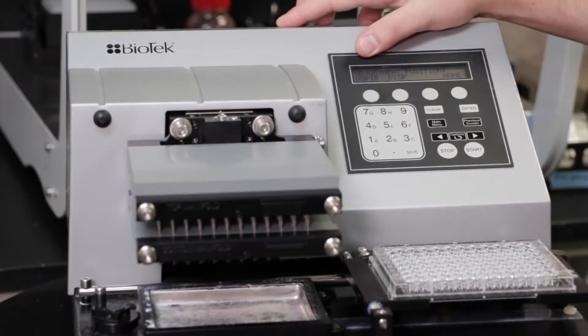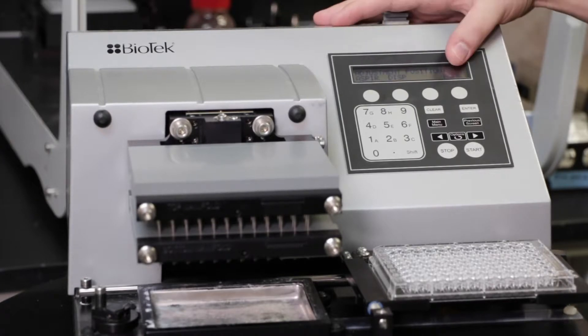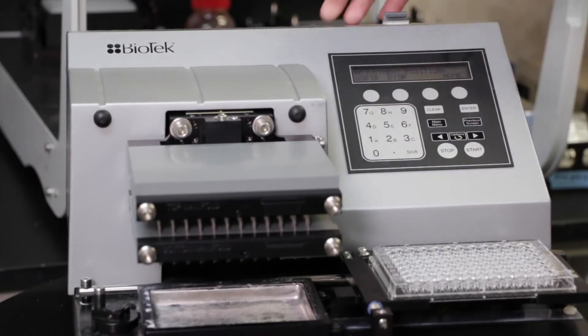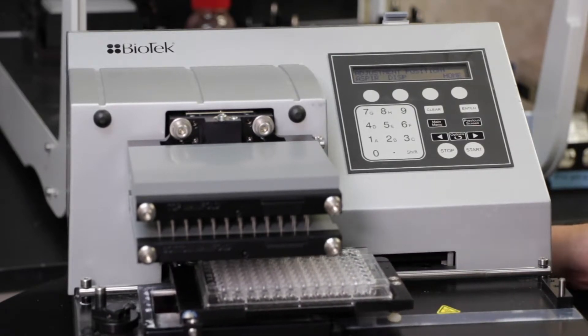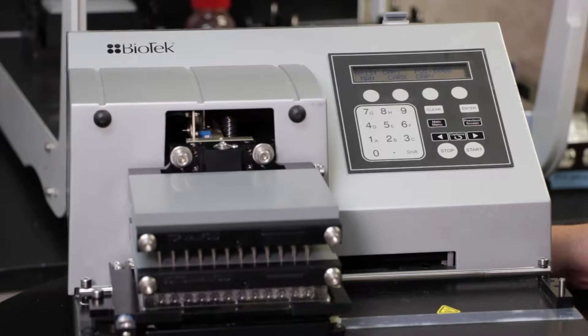Now we see three options: Aspirate, dispense, and home. These are all our positions. The home position will simply move the carrier back to the home state. We'll begin with the aspirate step. Press the button and the washer will bring the carrier over and lower the manifold to the default aspirate location.